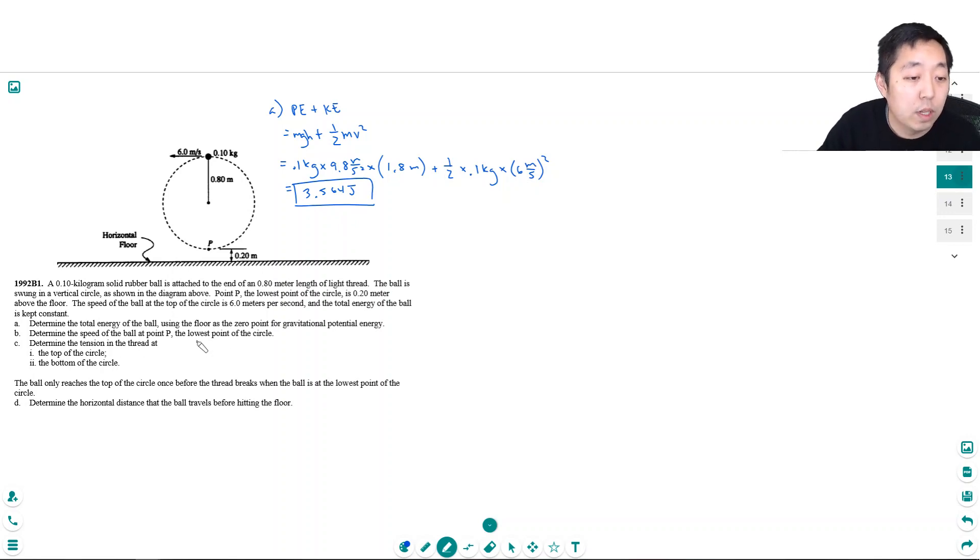Determine the speed of the ball at point P, the lowest point. Well all of this energy has to be the same here but it has lower potential energy so its kinetic energy must be higher. So again Mgh plus one half mv squared would have to be equal to the total energy which is 3.564 joules.